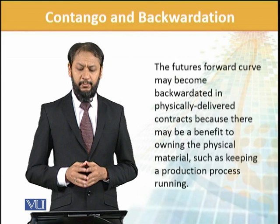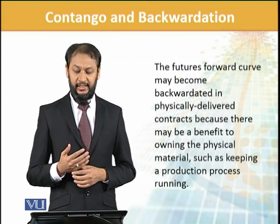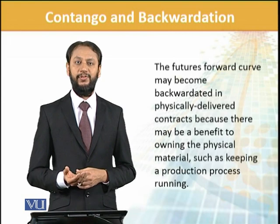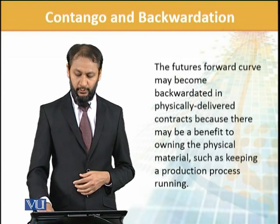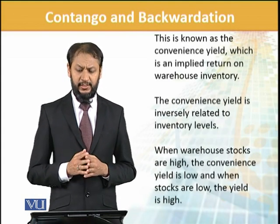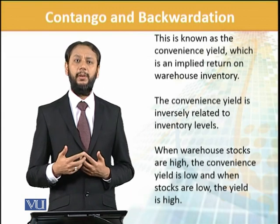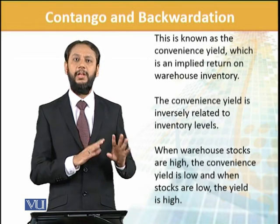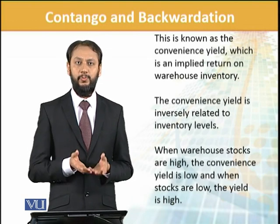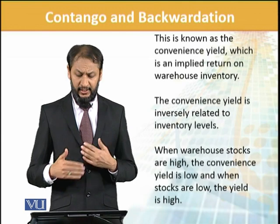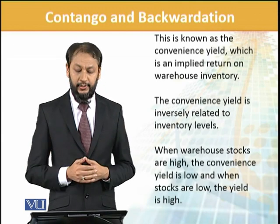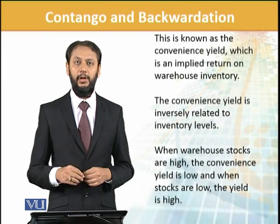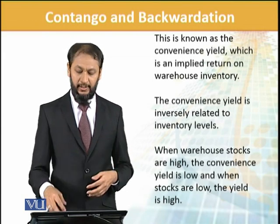The futures forward curve may become backward in physical delivery because of benefits of holding physical material — like for a production process, or when future supply may be restricted, or future policies are in its favor. This is known as the convenience yield, which is the implied return from warehouse inventory. You are willing to pay more at the spot level because it is more comfortable to hold the commodity now — since you don't know if it will be available in the future. So the spot demand is higher, and these factors determine the relationship between spot and future prices.